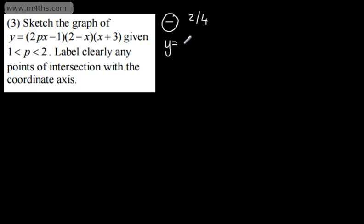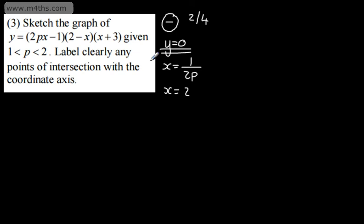If we consider now where this crosses the x-axis, y is going to be equal to 0. So 2px - 1 = 0 gives x = 1/(2p). If 2 - x = 0, then x = 2. And if x + 3 = 0, x = -3. Where this crosses the y-axis, that is when x = 0, giving -1 times 2 times 3, so the point is (0, -6).